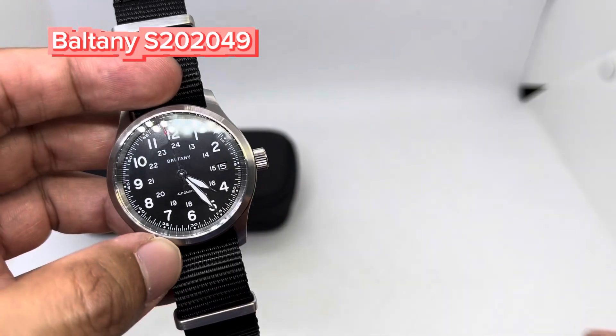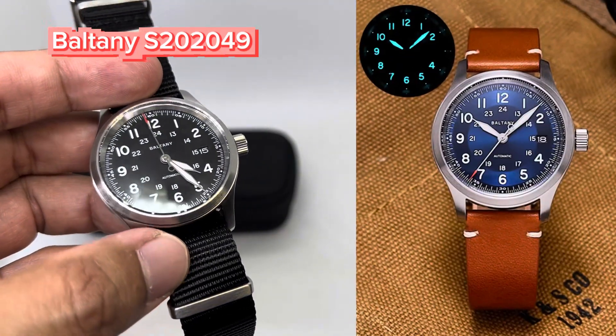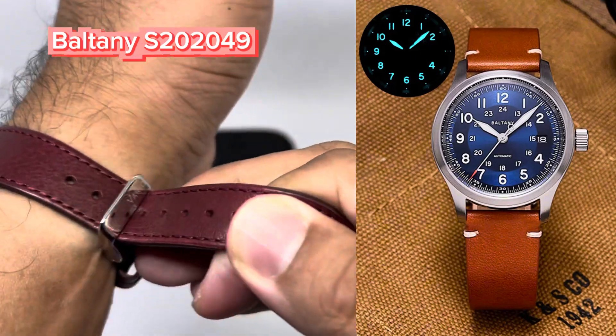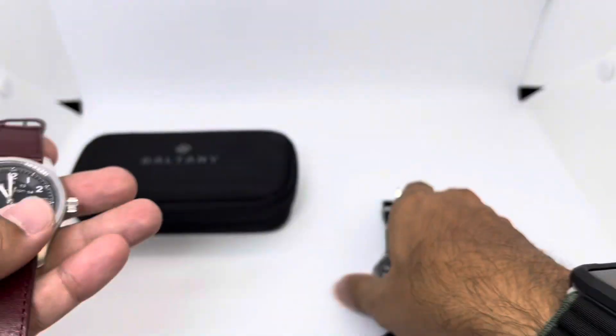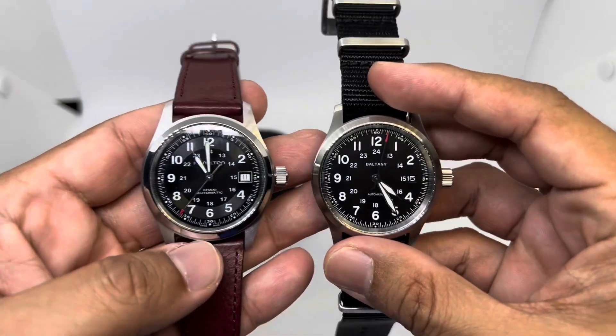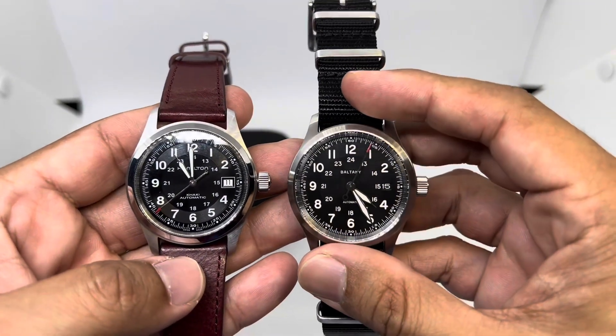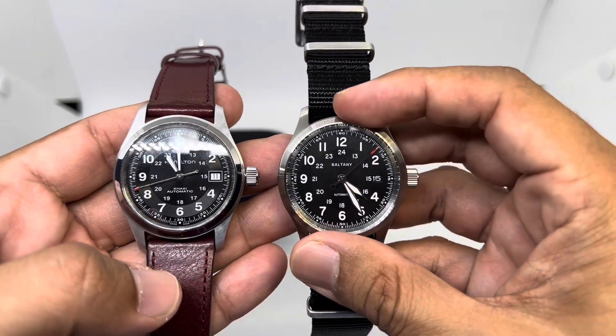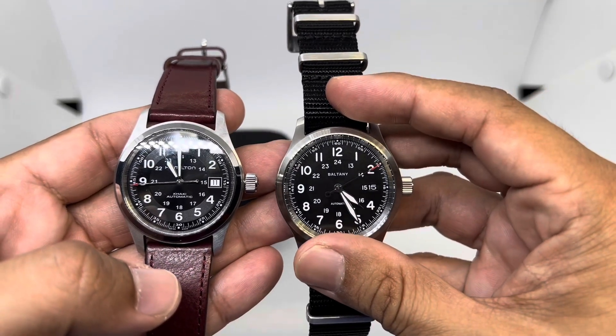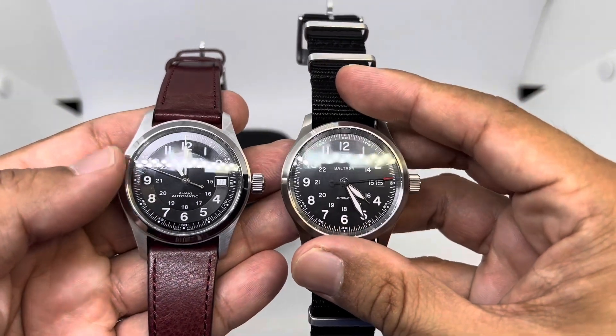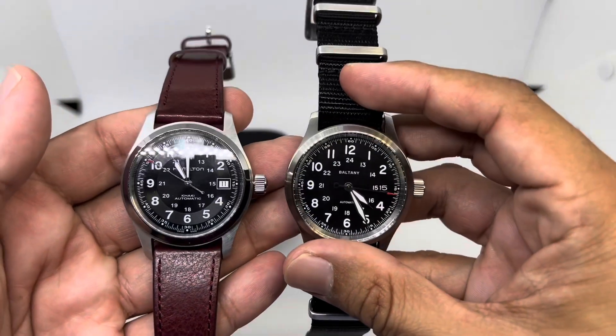I've opted for the black dial version. It also came with a sunburst blue dial, but I think to compare these things, you've got to go for the black one. When I first took it out of the box, I immediately can feel that this thing is a bit bigger compared to the 38mm Hamilton.